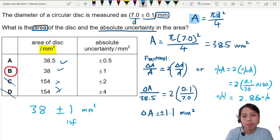But this is a percentage in A. We need to find exact value. So what is the error? 2.86% of 38.5. How many? What is that? That's how you find the absolute uncertainty.